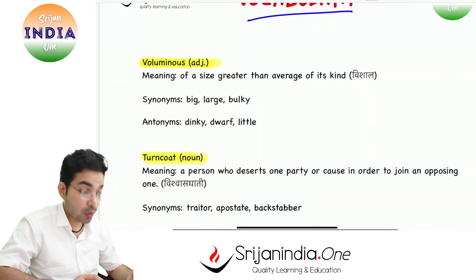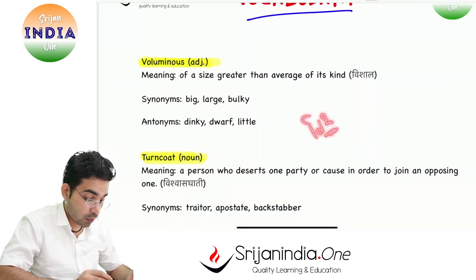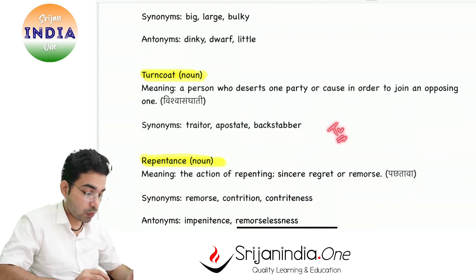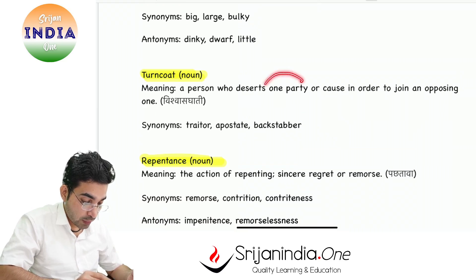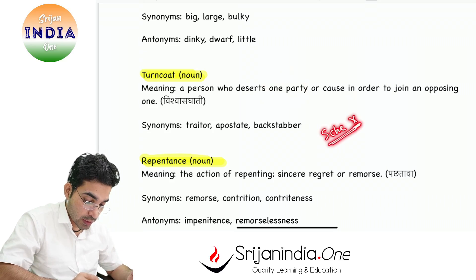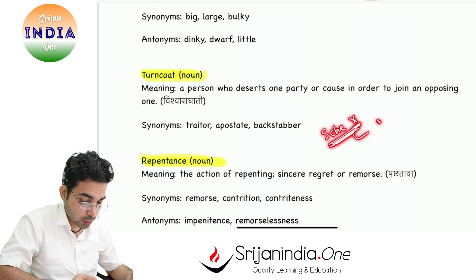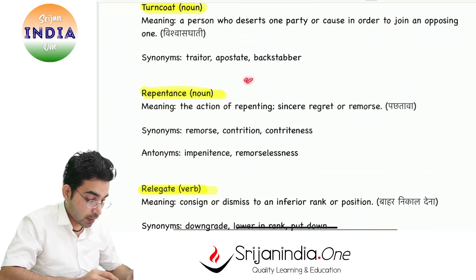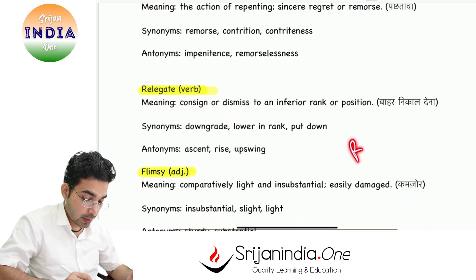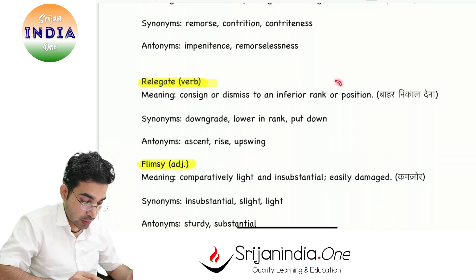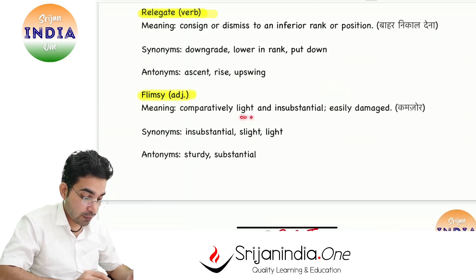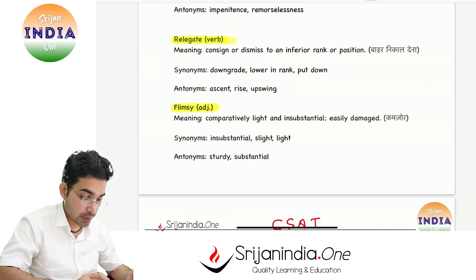Today's vocabulary: 'Voluminous' means vishal — of a size greater than average, big, large, bulky. 'Turncoat' — we use this word for a person who deserts one party or cause in order to join an opposing one. For this, there is Schedule 10 — can you prepare a very short note on Schedule 10 of the Indian Constitution? 'Repentance' means pachtawa — sincere regret or remorse. 'Relegate' means to consign or dismiss to an inferior rank or position. 'Flimsy' means kamzor — comparatively light and insubstantial, easily damaged.